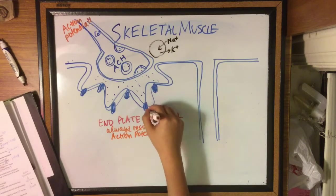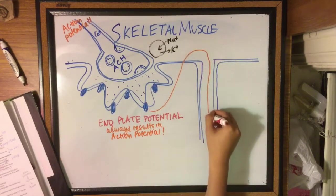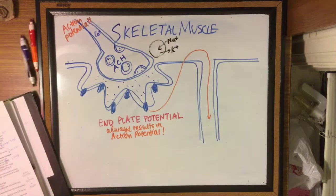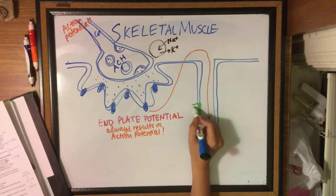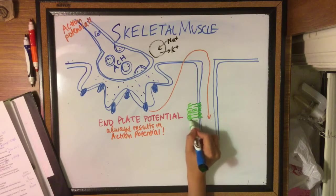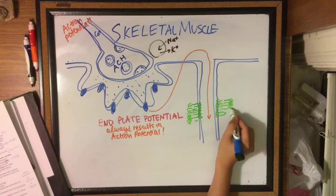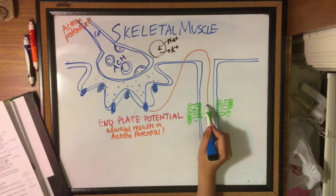The action potential travels down the cell membrane and all the way down the T-tubules. These T-tubules are positioned right next to the sarcoplasmic reticulum, which contains a lot of calcium storage within the muscle cell.